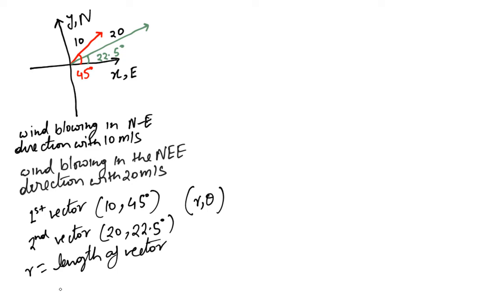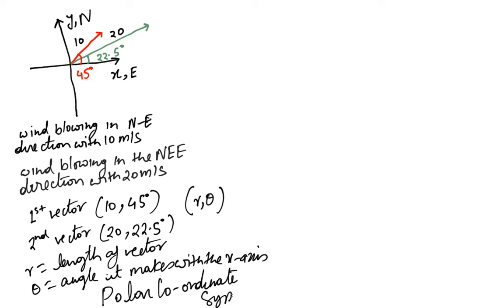And Theta is angle it makes with the x-axis. And this system is called Polar Coordinate System in which we specify R and Theta.